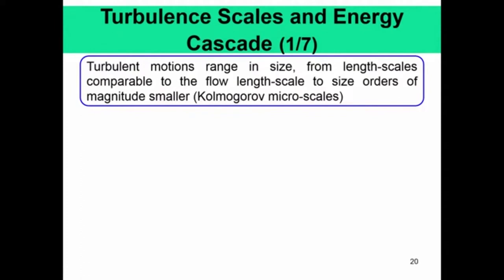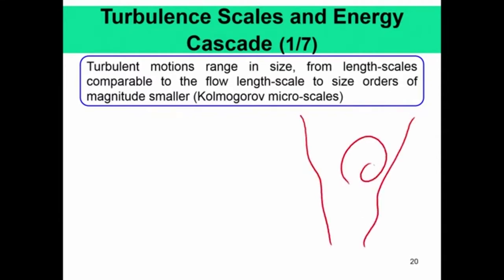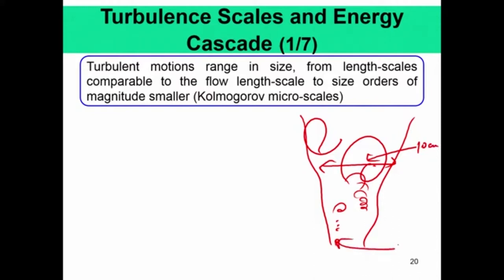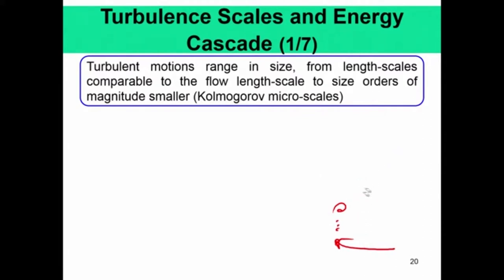As you have seen from the jet image, the turbulent motions range in size from length scales comparable to the flow length scales — for a jet, this can be the width of the jet — down to orders of magnitude smaller. For a jet, the largest eddies are essentially of the order of the size of the jet, but the smallest eddies cascade into smaller and smaller eddies. So if the largest eddy is of the order of 10 centimeters, the smallest can be of the order of a few microns, given the Reynolds number. That is the whole concept of this cascade.